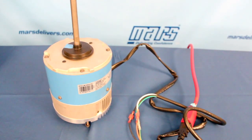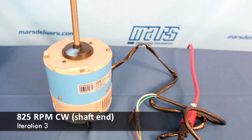Now it stopped and it will go on to the third iteration. And the motor is going to show us a slower speed now. It's giving us 825 RPM clockwise.